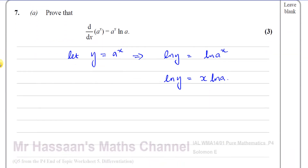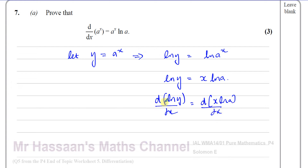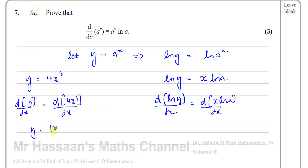Now we differentiate both sides with respect to x. We have the differential of ln y with respect to x equals the differential of x times ln a with respect to x. This is what's actually happening even in normal differentiation — for example, y equals 4x cubed: you differentiate both sides with respect to x to get dy/dx equals 12x squared. This helps us understand implicit differentiation, because we have to differentiate ln y with respect to x, and y is a function of x, so we use the chain rule.